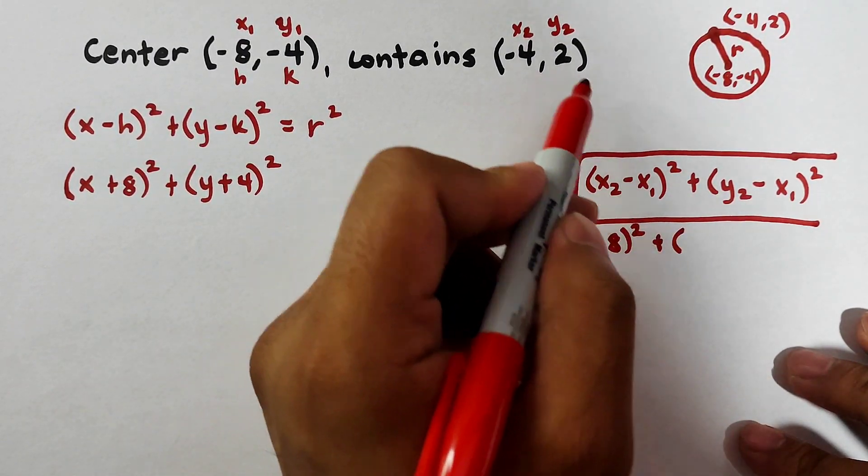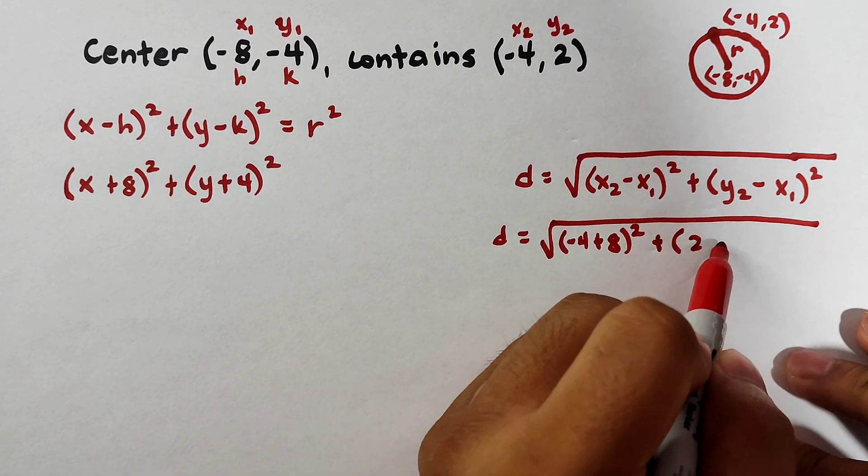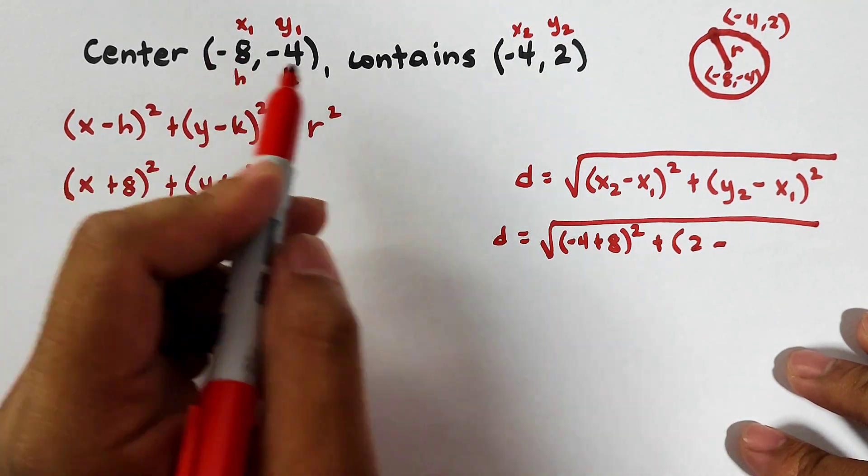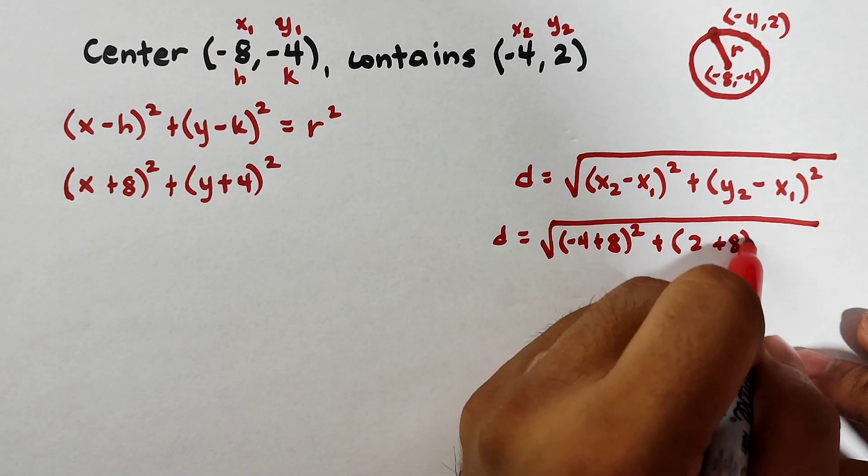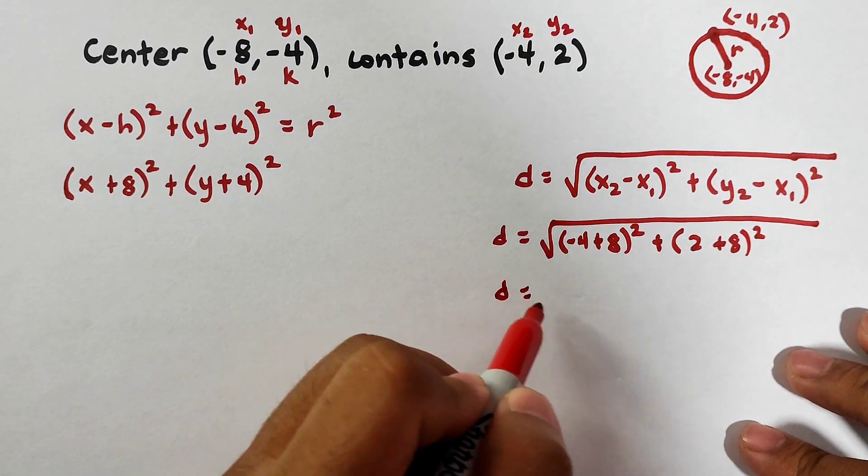your y sub 2 is 2, minus, your x sub 1 is negative, additive inverse, plus 8 squared.